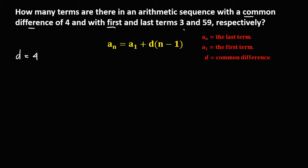Then since the first term is 3, therefore a_1 equals 3. And the last term is 59, so a_n is 59.